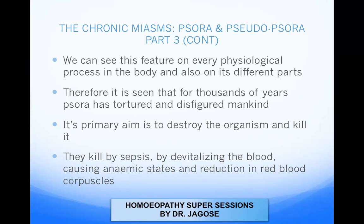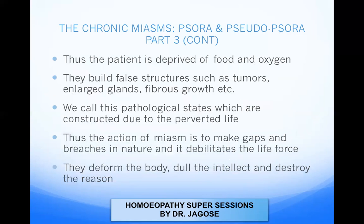The primary aim of any miasm is to destroy the organism and kill it. They kill by sepsis, by devitalizing the blood, causing anemic states and reduction in red blood corpuscles, thus depriving the patient of food and oxygen. They build false structures such as tumors, enlarged glands, fibrous growths, etc. — pathological states constructed due to perverted life, because of the deviation of the vital force.